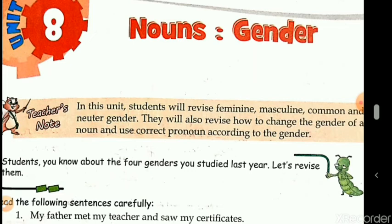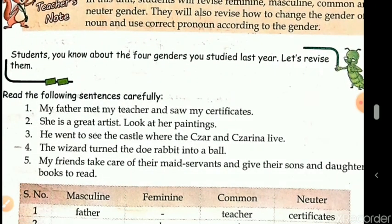Masculine gender is for males — boys and men. Feminine gender is for all females — women, girls and female animals. Common gender is mostly referred to with occupations. Neuter gender refers to all common nouns that are non-living things — they are neither male nor female. A common gender can be a male or a female. So, four genders — you all are now aware.